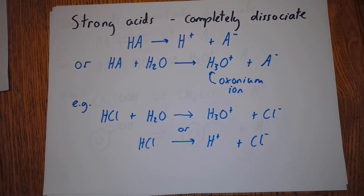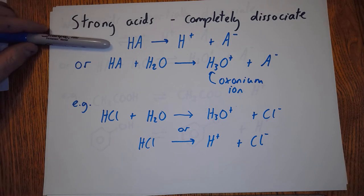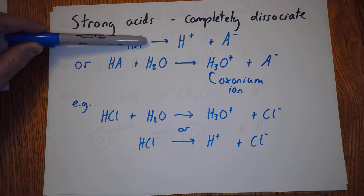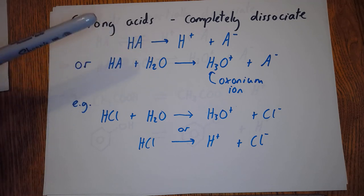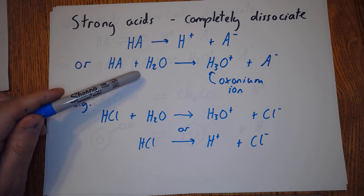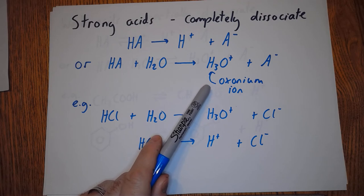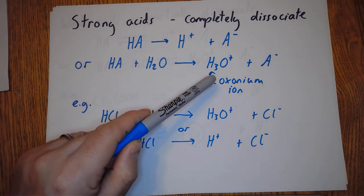A bit more revision here. Strong acids completely dissociate. HA represents any acid where the H is the H+ it hasn't dissociated yet, and the A is the rest of the acid. We can write out its dissociation - complete dissociation with a one-way arrow, and we can see it makes H+ and A-. In textbooks, they can be written this way where the HA reacts with water. The H+ joins onto the H2O to make the oxonium ion H3O+ and you're left with the A-. These are interchangeable, as are H+ and H3O+.